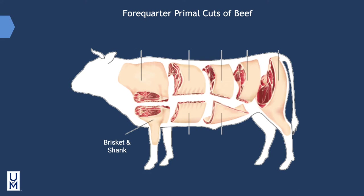Marrow — the soft tissue in the center of the fore and hind shank bones — is considered a delicacy when cooked and added to sauces or spread on toast. The hind shank is the animal's leg, and the term shank generally refers to either the foreshank or the hind shank.